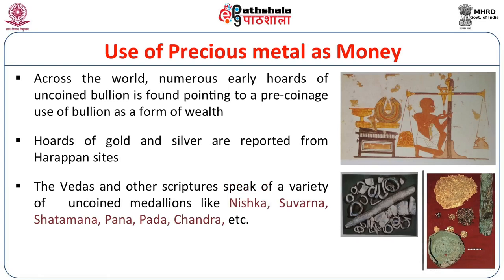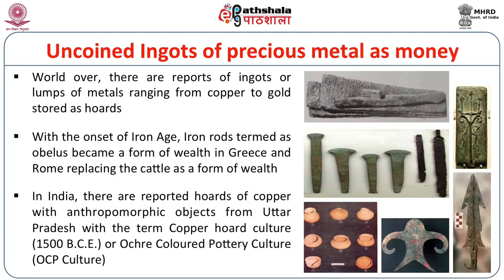The Vedas speak of a variety of uncoined metallions like Nishka, Suvarna, Shatamana, Pana, Pada, and Chakra. In India itself we find a lot of uncoined ingots of precious metal, ranging from copper to gold, stored as hoards. One important example is the copper hoard culture, also known as the Ochre Coloured Pottery or OCP culture in Uttar Pradesh, dated to about 1500 BC. Here we find copper objects which almost look like swords, along with anthropomorphic objects resembling human figures — considered forms of wealth in that period.